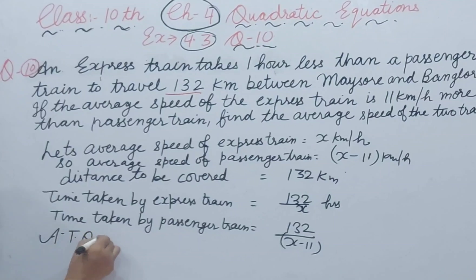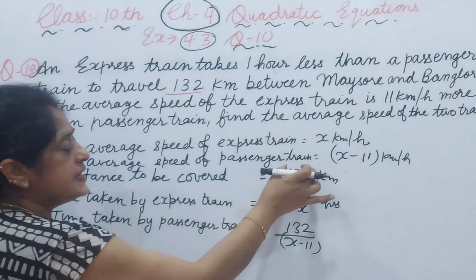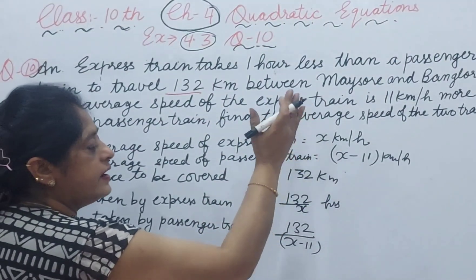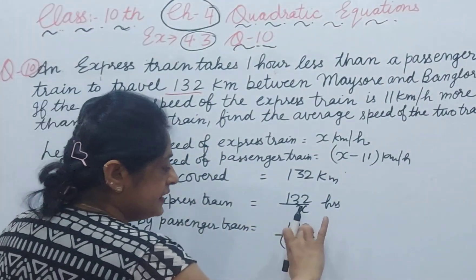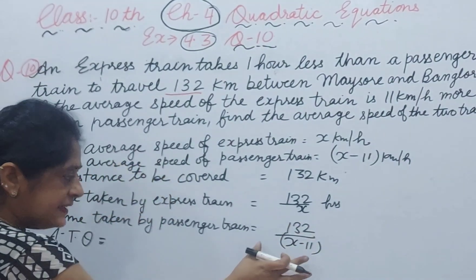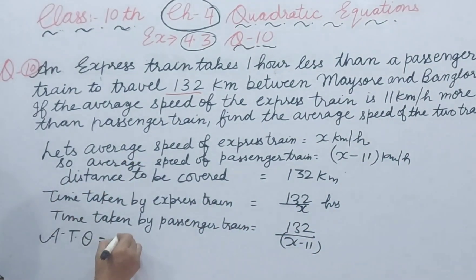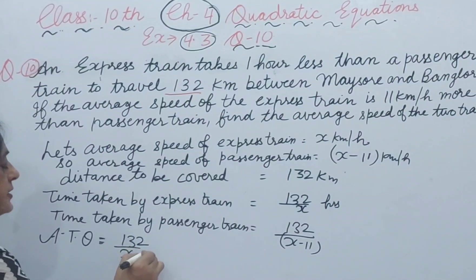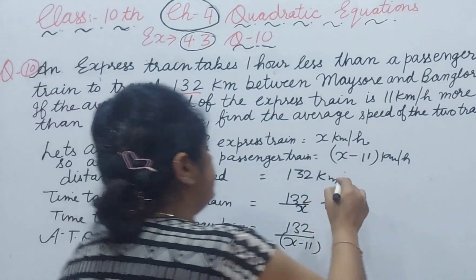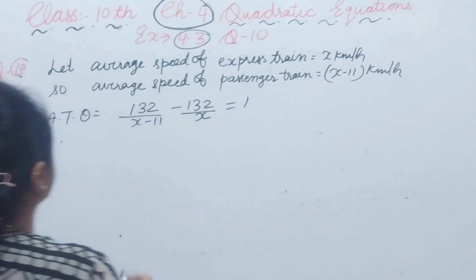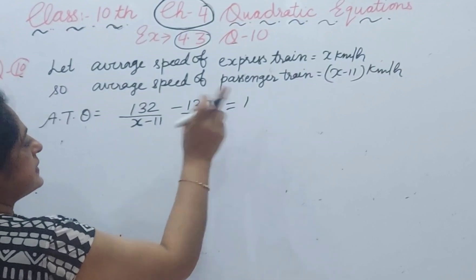According to the question, the express train takes 1 hour less than the passenger train. We write the equation in terms of time: the passenger train's time is 1 hour more than the express train's time. So, 132 upon (x minus 11) minus 132 upon x is equal to 1.